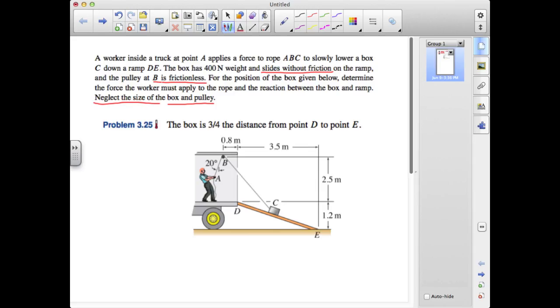If we're neglecting the size of the pulley, we won't make any distinction about the center of the pulley and specifically where the rope at B is coming off the pulley. So we'll just use the dimensions that are given in the figure as the basis for establishing positions and not worry about small distances above and below the centers of locations that are given.